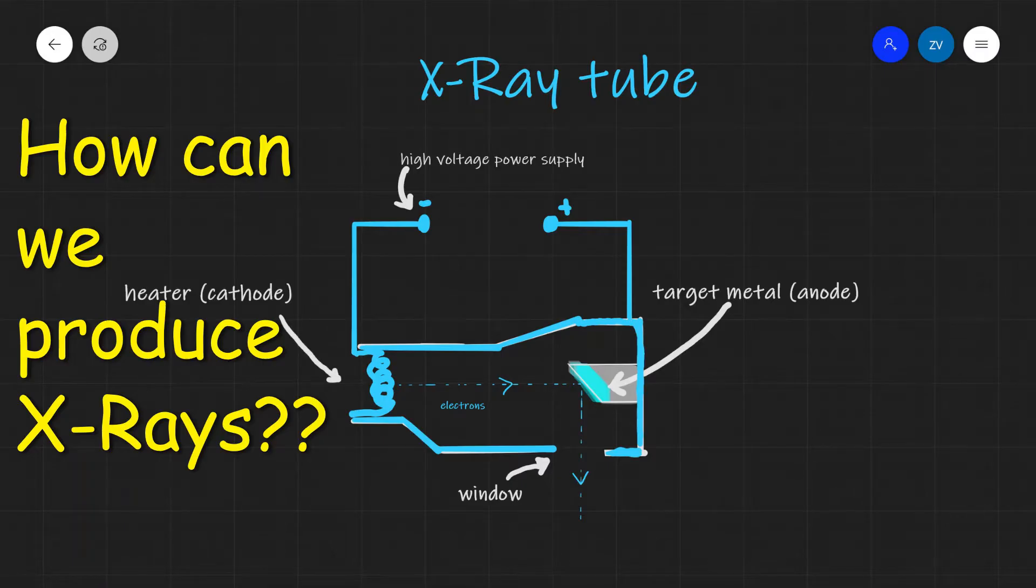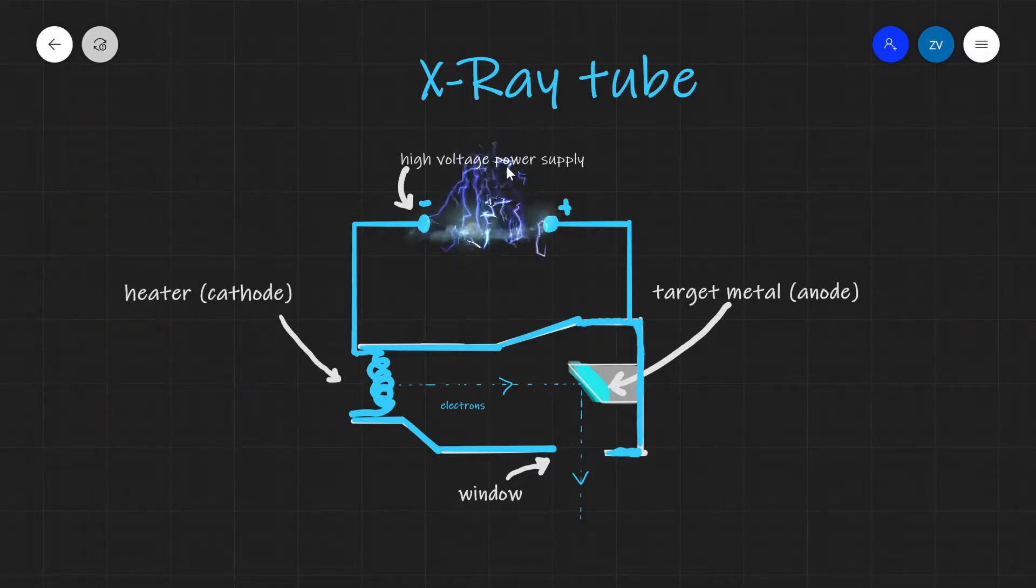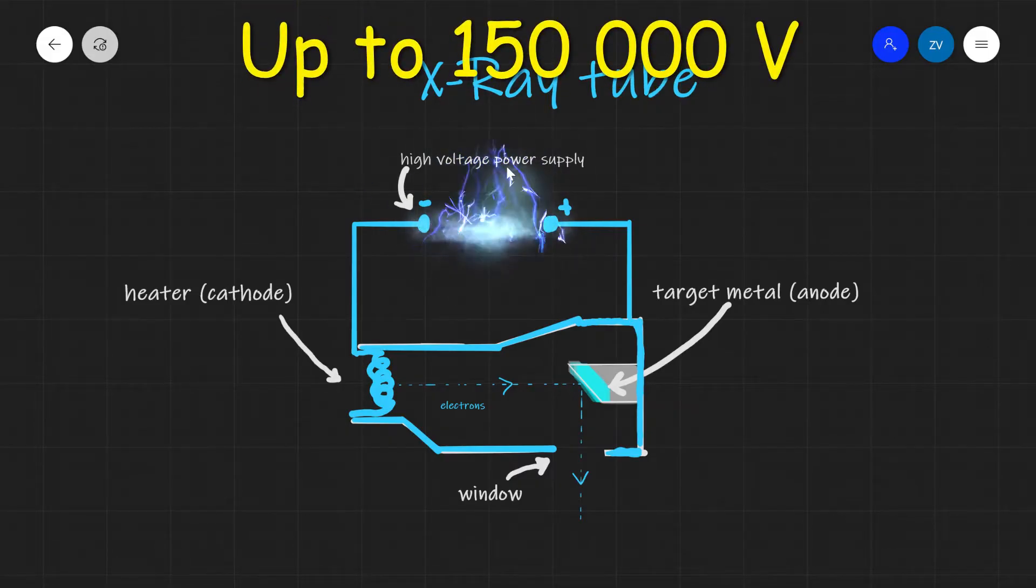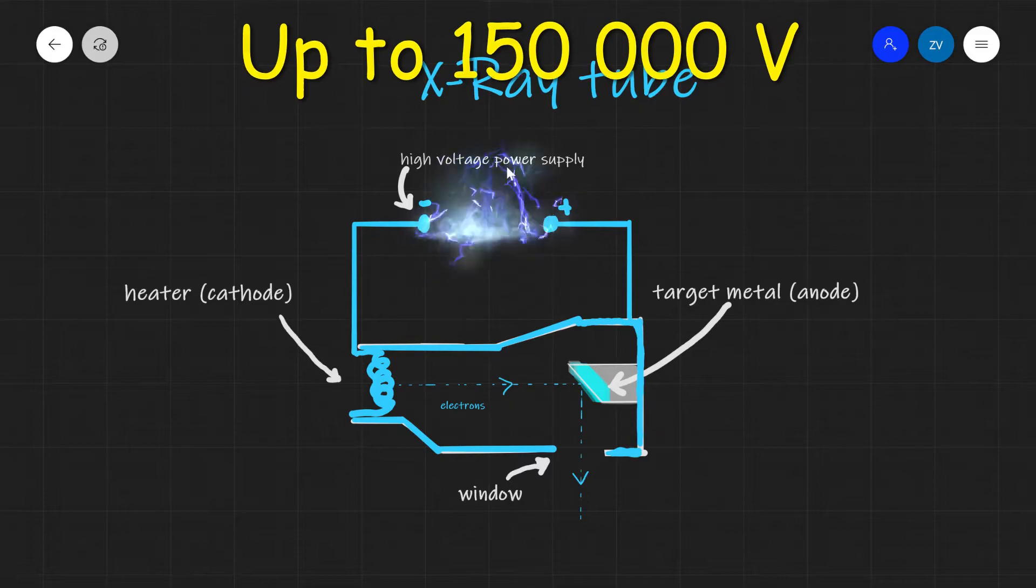First off, we need a very high voltage power supply. Now we are talking about the order of thousands of volts, sometimes even hundreds of thousands of volts. For an x-ray to be produced, normally we would need somewhere between 50 to about 150 thousand volts.